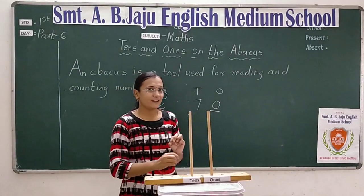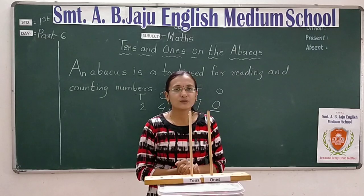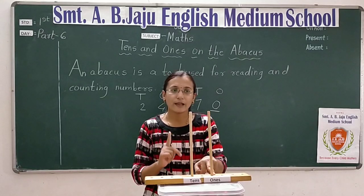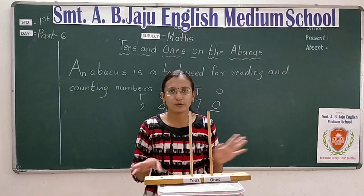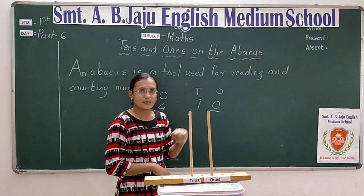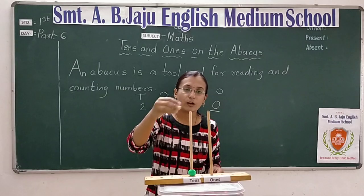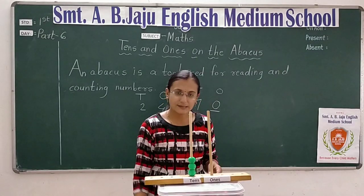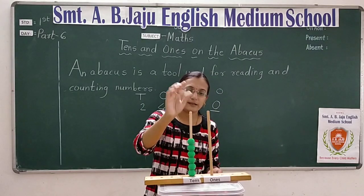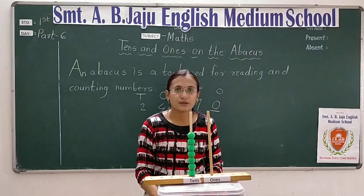Toh abacus pe kaise karenge? Ones place pe kuch hai kya? Kuch nahi hai. Ones place pe zero hai. Zero means nothing. Agar koi bhi number abacus pe represent kar rahe ho aur us number pe zero aaya hai, toh us place ke rod mein kuch nahi daalna hai, khaali chhodna hai. Okay? Toh yahan bhi ones place pe kuch nahi hai, iska meaning zero hua. Aur tens space pe konsa number hai? Seven. So, tens space pe kitne beads daalenge? Seven. One, two, three, four, five, six, seven tens. Seven tens, zero ones — number kya bana? Seventy. Okay students.